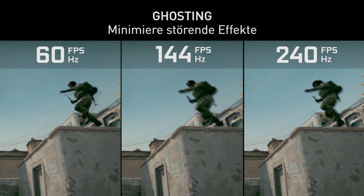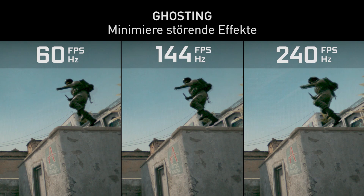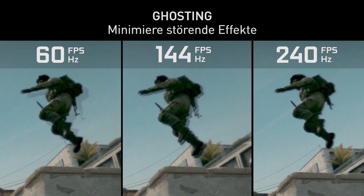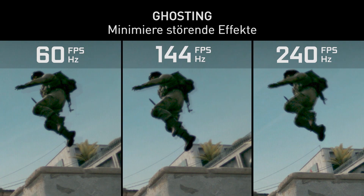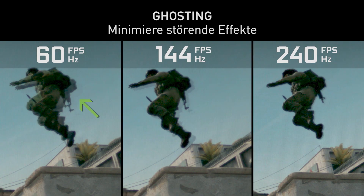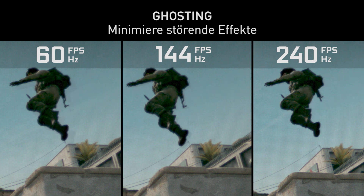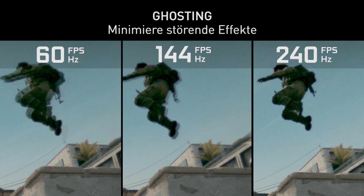Looking at this in-game in CSGO, our character is moving from right to left. At 60 hertz, the animation steps are fairly large, so the ghosting is fairly pronounced. On the right-hand side, you can see the character moving at 240 frames per second — the steps are much smaller, so the ghosting is much less pronounced and therefore much less distracting.